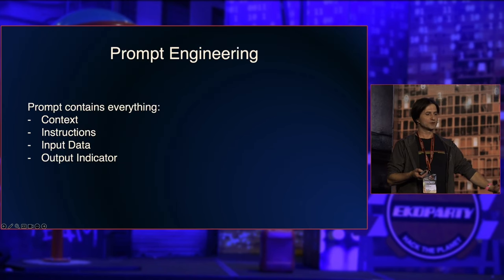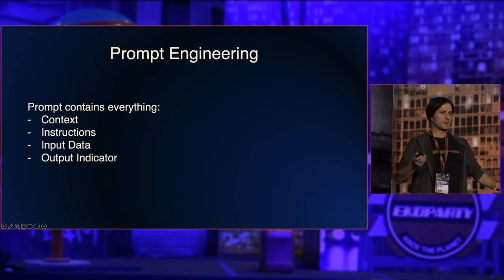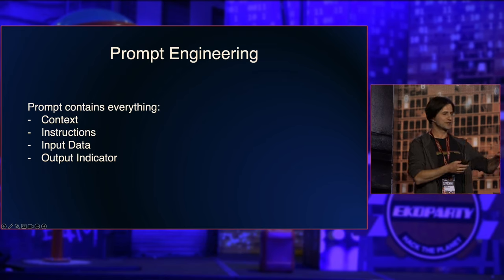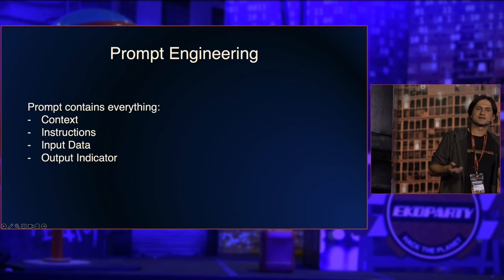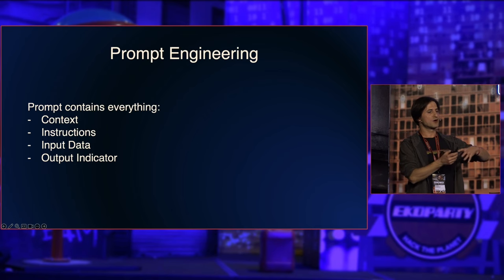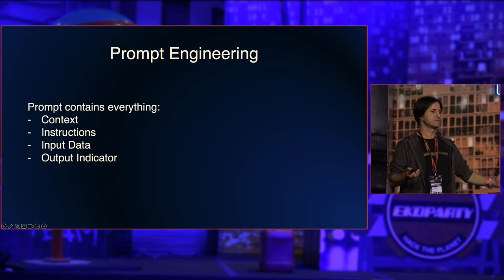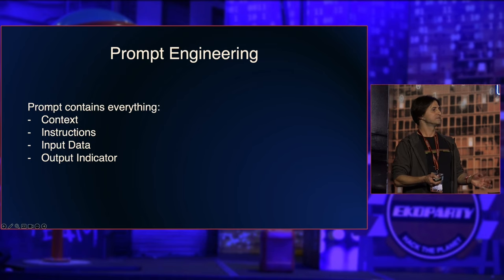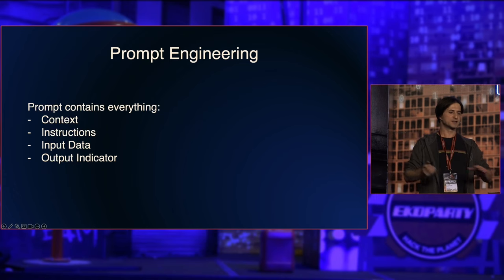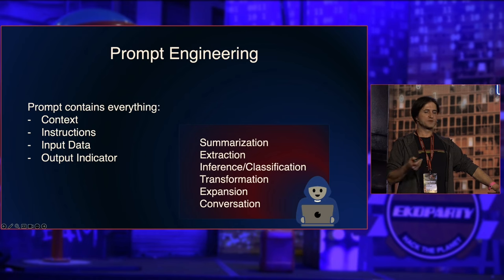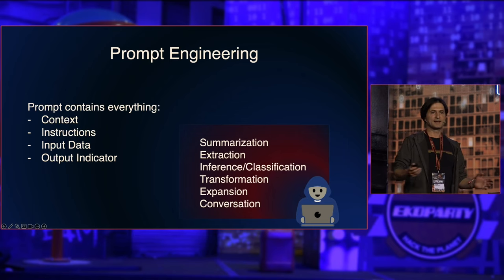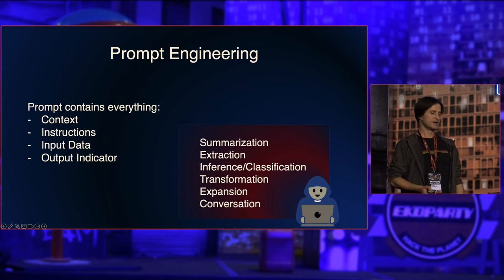This concept of prompt engineering is important for understanding attacks. The prompt contains basically everything: the context, conversation history, instructions for what the language model should do, input data, output indicators — like produce JSON or HTML or translate from English to Spanish. This enables useful tasks like summarization, extraction, inference, transforming data, and expanding a small piece of data into a larger conversation.